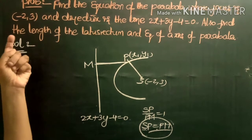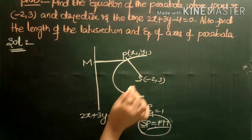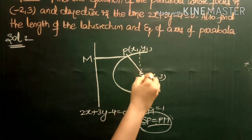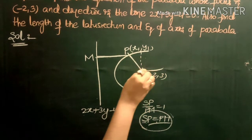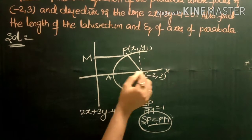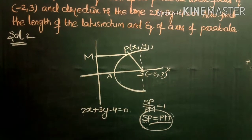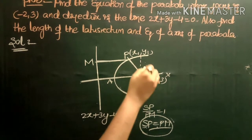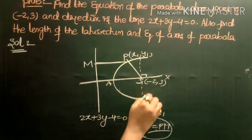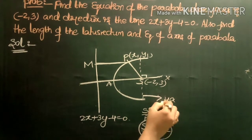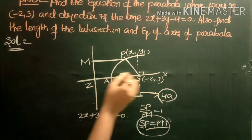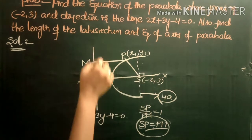Also, we need to find the length of the latus rectum. The latus rectum is the line which passes through the focus and is perpendicular to the axis of the parabola. The length of the latus rectum is 4a, where 2a is the perpendicular distance from the focus to the directrix.